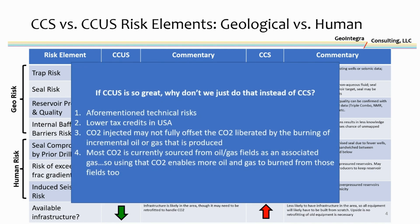One question might be: if CCUS is so great, why don't we just do that instead of CCS? There are the risks mentioned previously — particularly leakage along old boreholes. But also, there are lower tax credits available in the USA to help recoup money invested in it. Some have argued that the CO2 injected into subsurface reservoirs may not fully offset the CO2 liberated by burning the incremental oil or gas produced. And frankly, most CO2 injected into oil and gas fields is produced from other oil and gas fields with a lot of dissolved CO2 — they strip that CO2 out and bring it over to inject, which ultimately allows other oil and gas fields not associated with the CCUS project to continue producing.